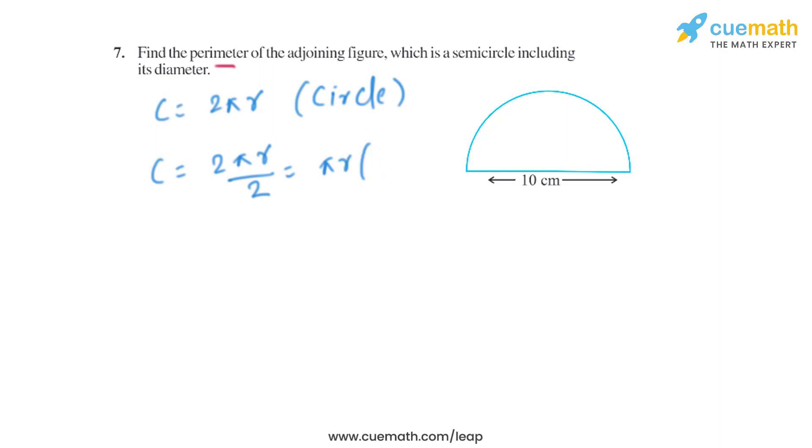Now let's find the perimeter of this figure. So the perimeter of this figure will be πr plus the diameter. The diameter is 10 centimeters, that is given in the question. Let's take π as 3.14 and the radius of the circle is 5 centimeters. So it will be 3.14 multiplied by 5 plus 10.